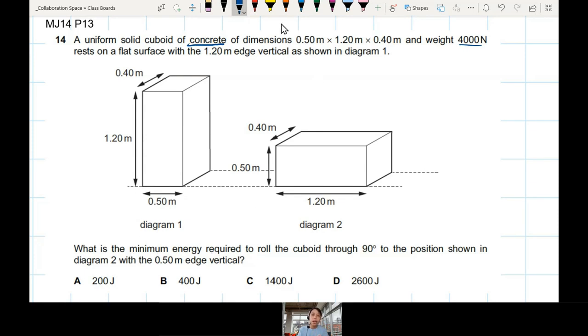What is the minimum energy required to roll it 90 degrees with this edge vertical? So what I'm saying is, how much energy do you need to do this? You push and it rolls over.